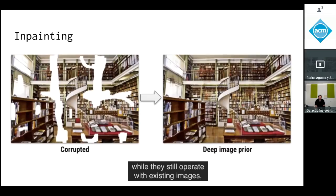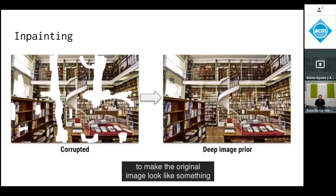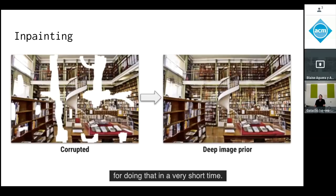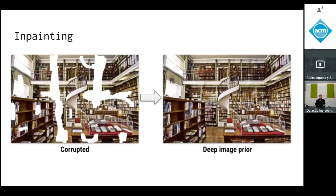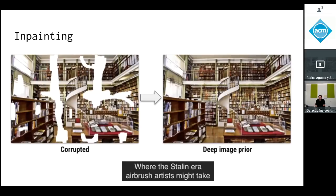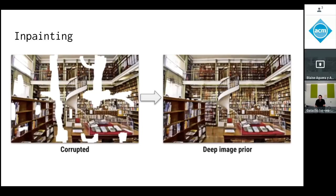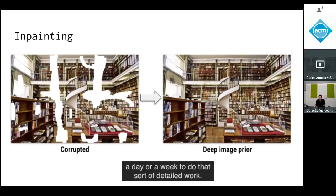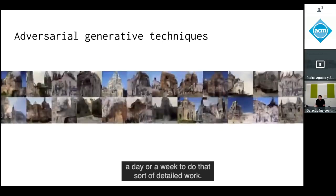Now we're getting into techniques that, while they still operate on existing images, modify them in ways designed to make the original look like something it's not — giving us powerful automated tools for doing that very quickly, where a Stalin-era airbrush artist might take a day or a week to do that sort of detailed work.